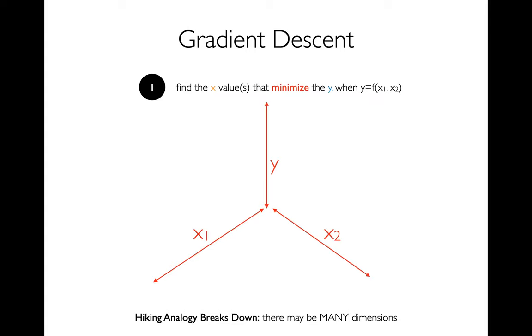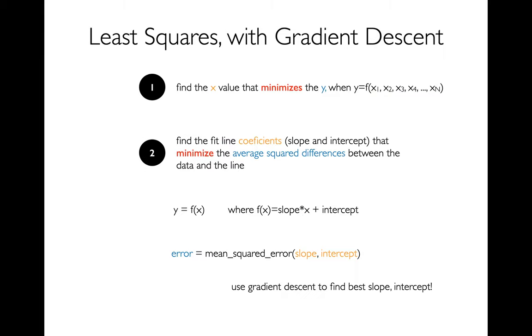Other cases where the analogy breaks down to hiking is that you might have many dimensions. If I'm in three dimensions, that actually kind of makes sense. I mean, I could imagine a 3D topography. But eventually, we might have cases where y equals f of x1, x2, x3, all the way up to xn. So I don't kind of have that clear picture. But we could still have this strategy. We could say, with respect to each of these, which one's kind of tweaking up or tweaking down will make my y value smaller? So I could do that.